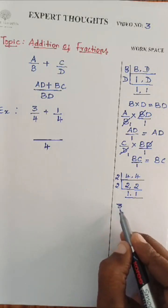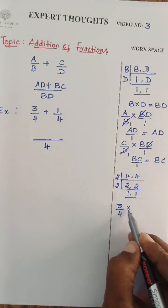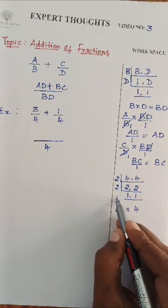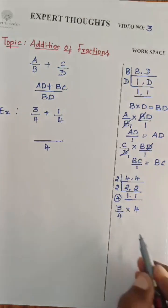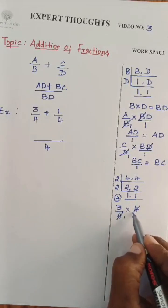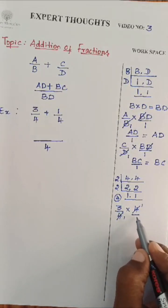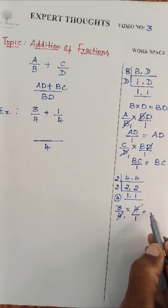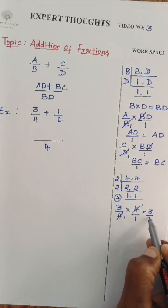What is that? 3 by 4 into the LCM. The LCM what we got is 2 into 2, which is nothing but 4. 4 ones are. You know already it is nothing but divided by 1. So, 3 into 1 is nothing but 3 by 1, which is nothing but 3.